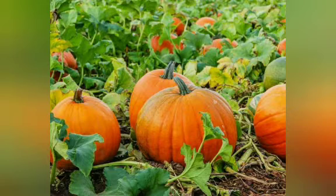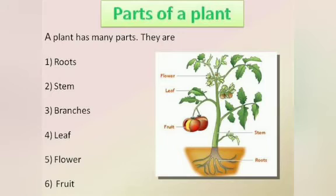Next coming to the parts of the plants. What are the different parts of the plants? Roots, stem, branches, leaves, flower, and fruits.